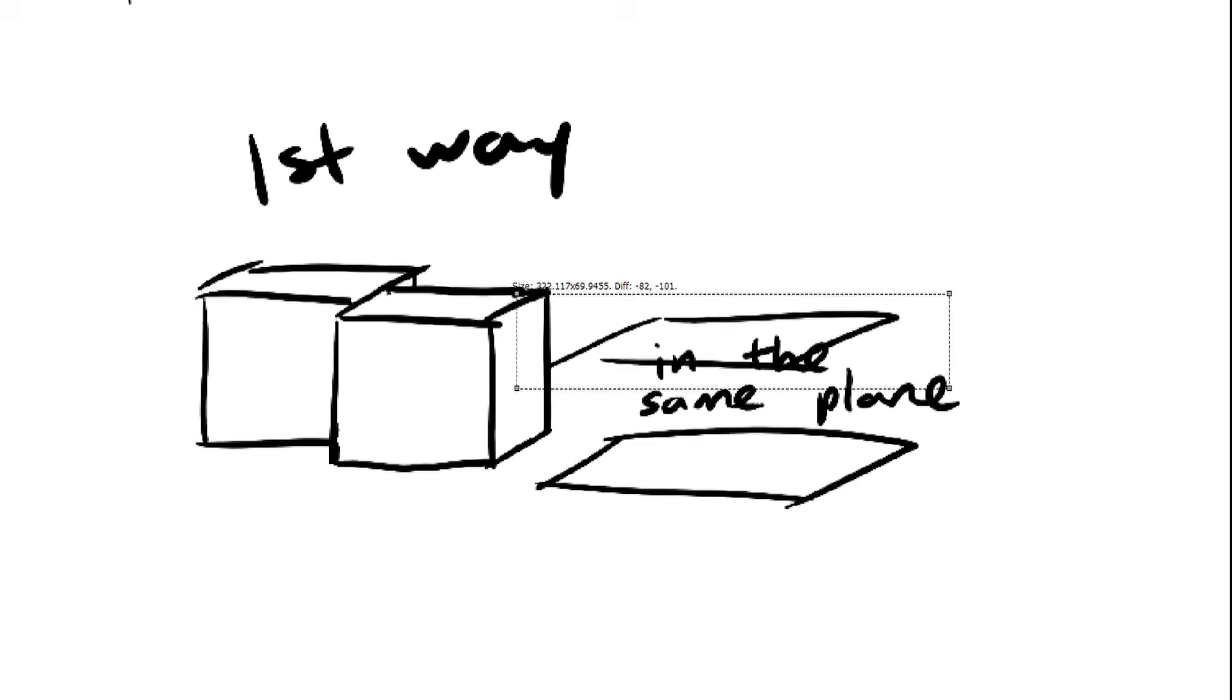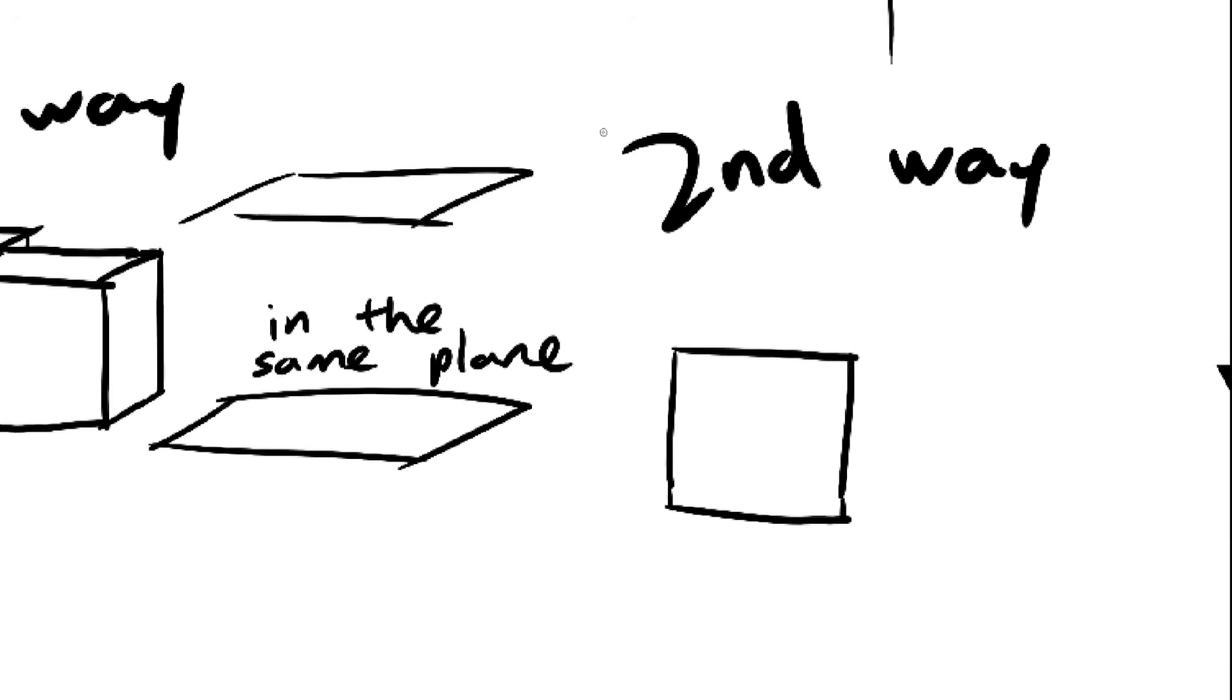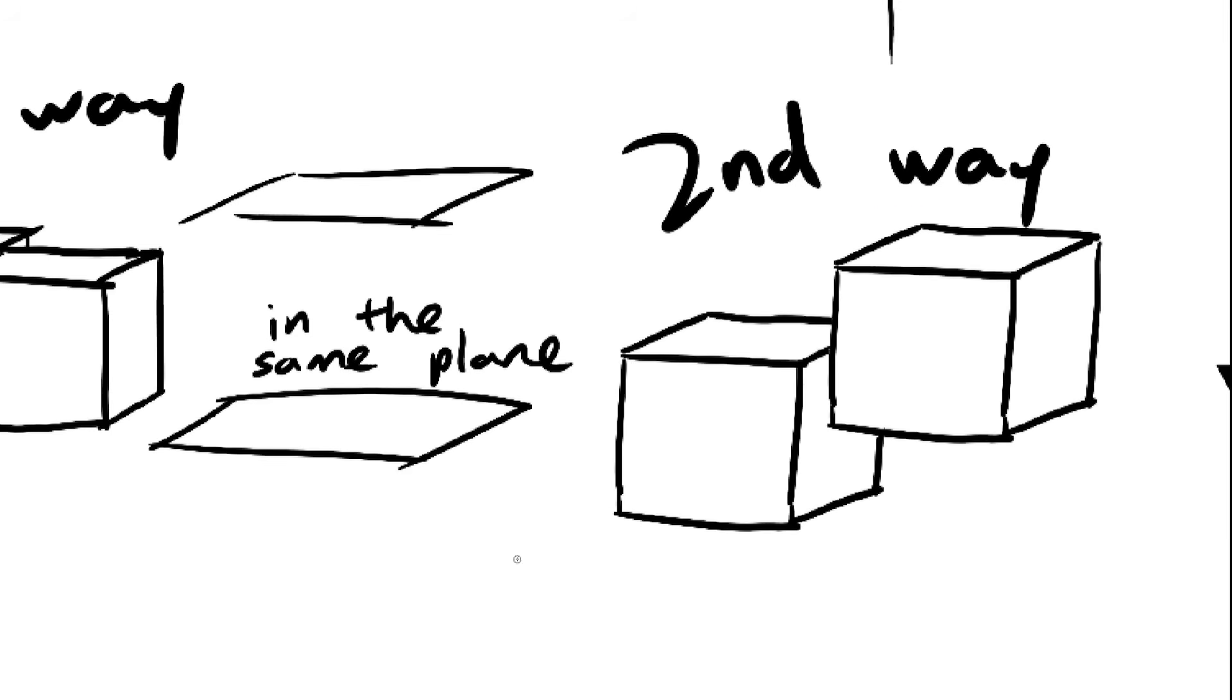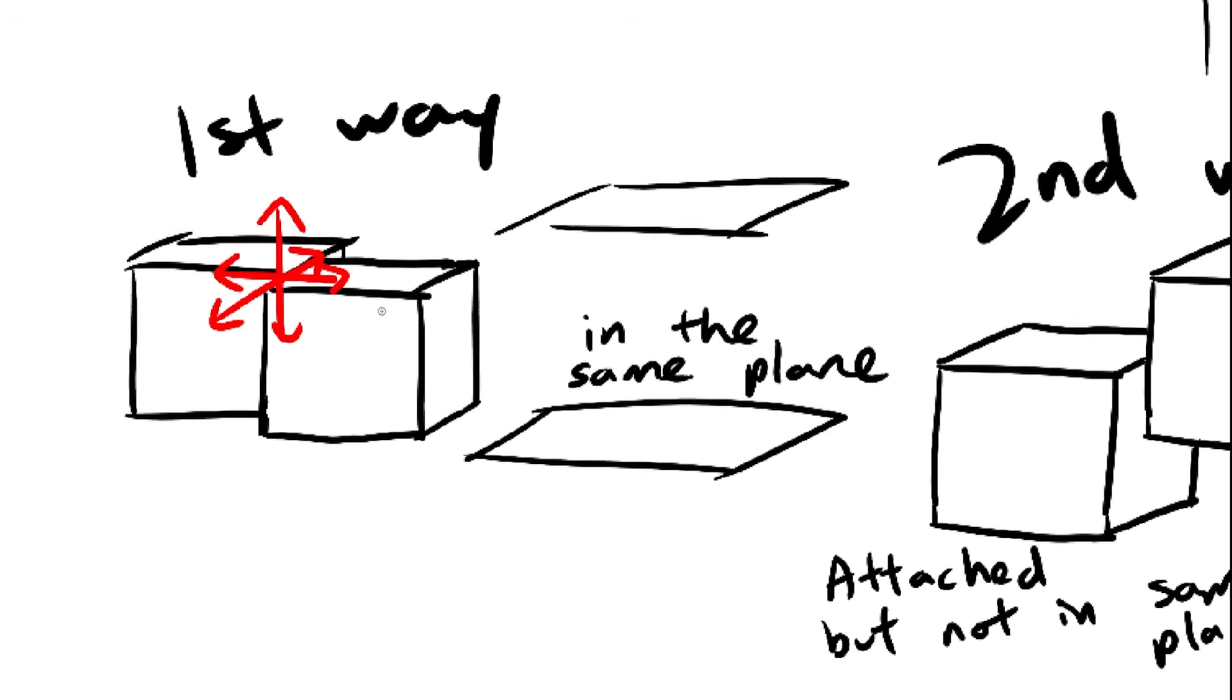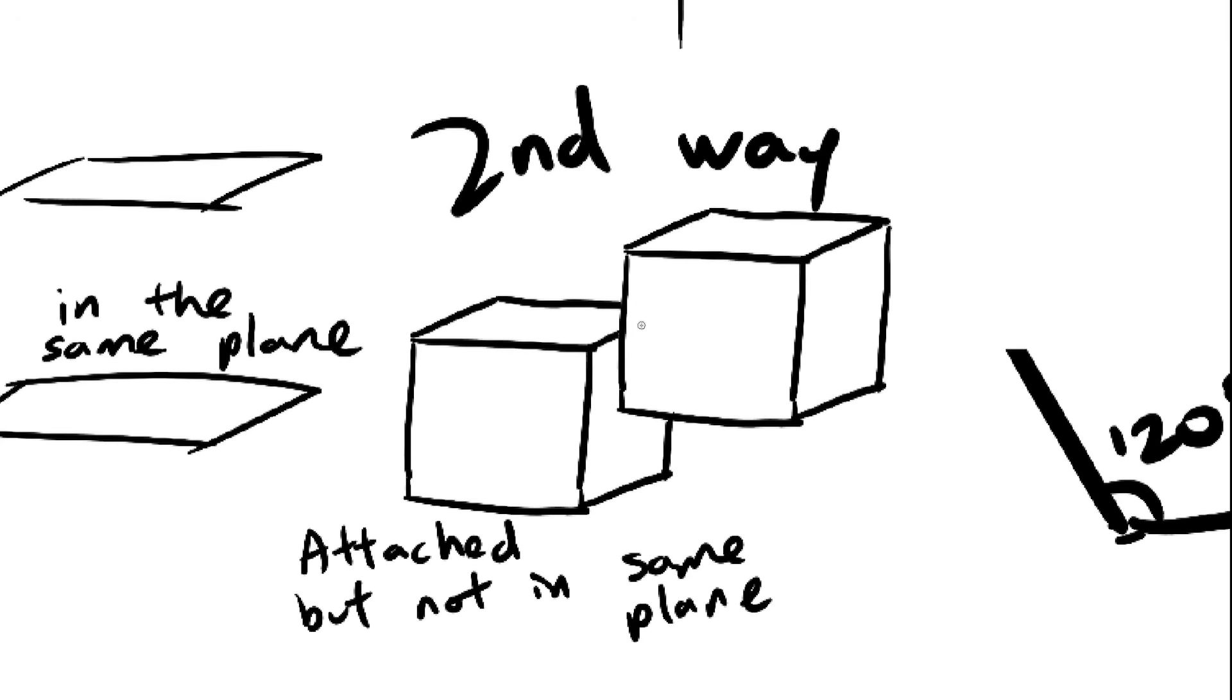Either we add a cube like this, so that it's sort of aligned to the existing cube in the same plane, or we add a cube like this, so that it's not really aligned but it's still glued to the cube. The first way will lead to two new octants being filled,